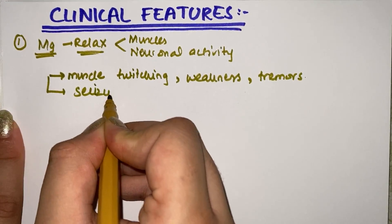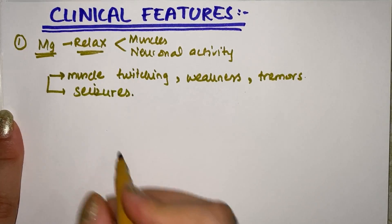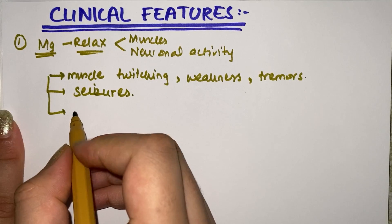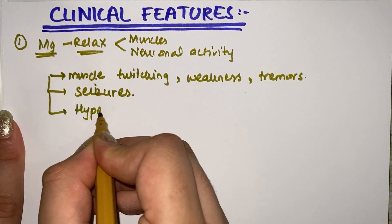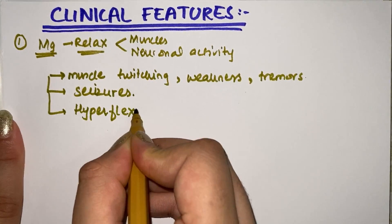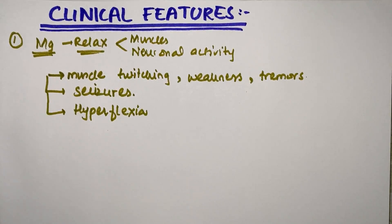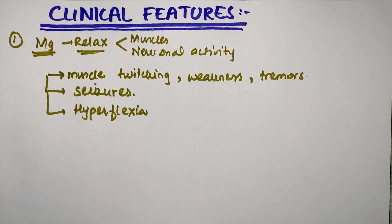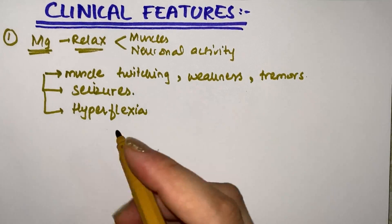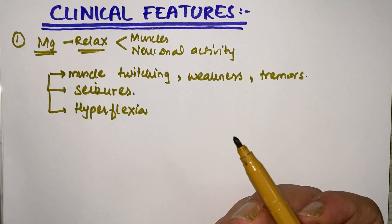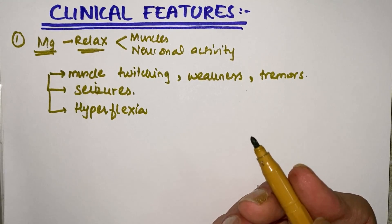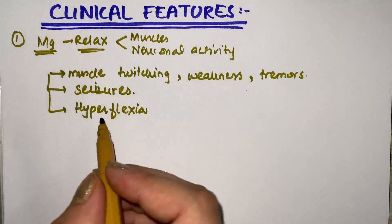Similarly in the brain, activity will be increased so seizures will develop in the patient. Hyperflexia will be present because the muscles will become in flex state and the tendons will be in the flex states. But just remember hyperflexia is important as a clinical feature. If it's prolonged, then mental status changes also occur.